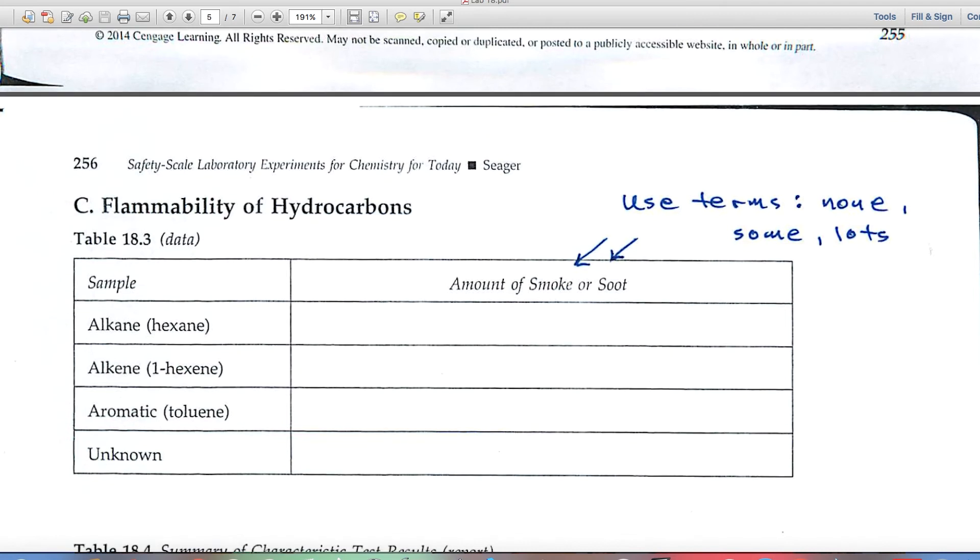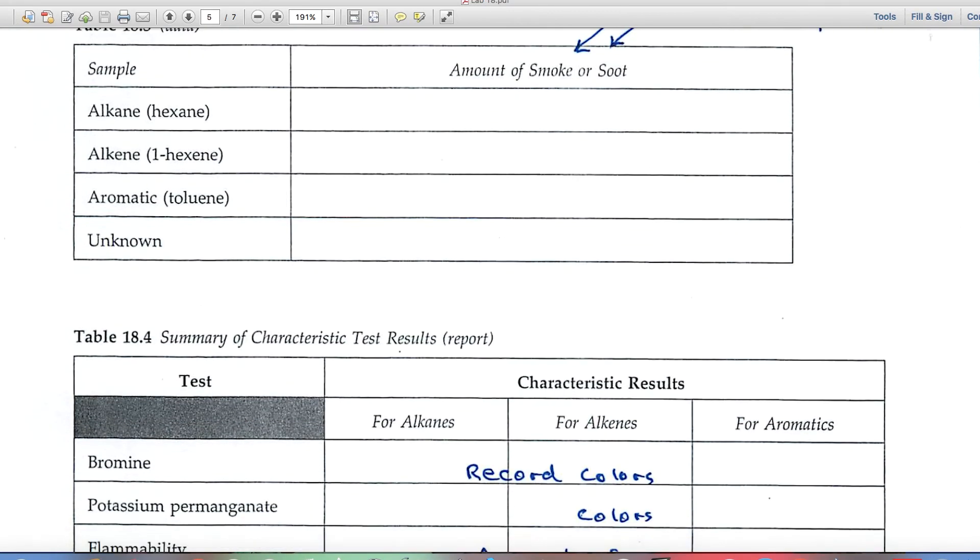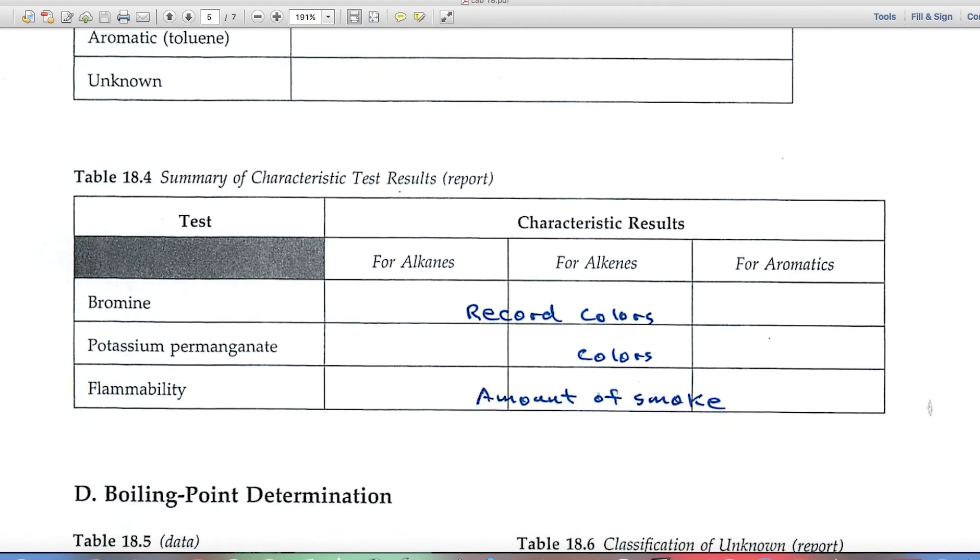In Part C, you'll be looking at the flammability of hydrocarbons. And each of these substances, as hydrocarbons, will burn, and they'll give off various amounts of smoke or soot. And so some of the terms that you'll maybe use in describing what you see in the photographs would be none, or some, or lots. That would be fine. Not real specific, but yet indicate the amount of smoke that you see.